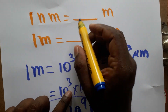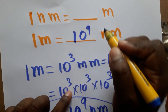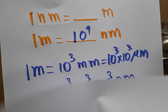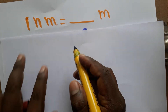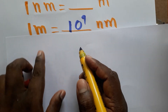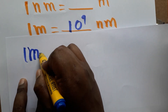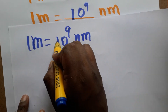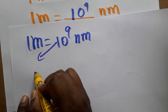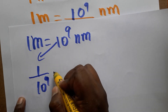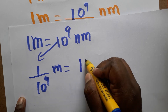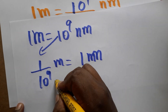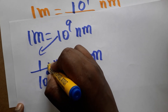Now the other way: 1 nanometer is equal to how many meters? From what we derived, 1 meter equals 10⁹ nanometers. We bring 10⁹ to the denominator, so 1 divided by 10⁹ meters equals 1 nanometer — that is, by cross multiplication from numerator to denominator.